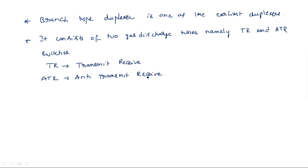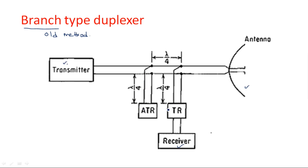TR and ATR are two gas discharge tubes used to stop and transmit the signal — from the transmitter to the antenna, and from the antenna to the receiver. When the transmitter is turned on, the TR and ATR discharge tubes are fired, meaning they act like a short circuit. These tubes are located at a distance of lambda by 4 from the transmission line, and the distance between the TR and ATR tubes is also lambda by 4.